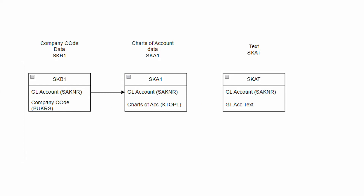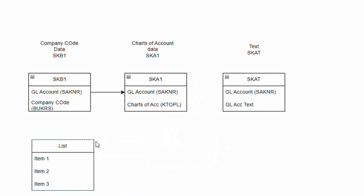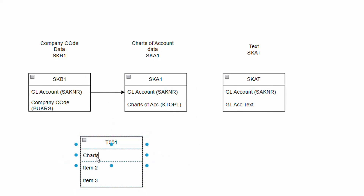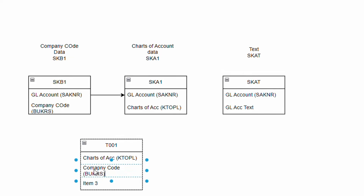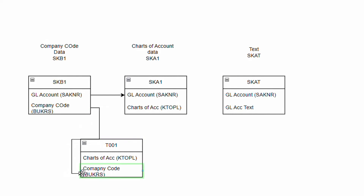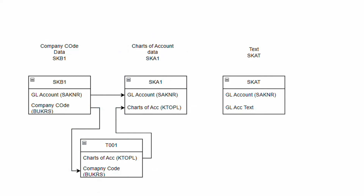For that we require table T001, which helps us map the company code with the charts of account. T001 contains both KTOPL (charts of account) and BUKRS (company code). We will map the company code from T001 to SKB1's company code, and take the charts of account from T001 to SKA1's KTOPL - so we get the same GL account from both SKB1 and SKA1.